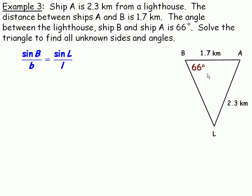So, I'll write sine B over B equals sine L over L, and fill in the known values. So angle B is 66, side B is 2.3, side L is 1.7, and there's angle L.